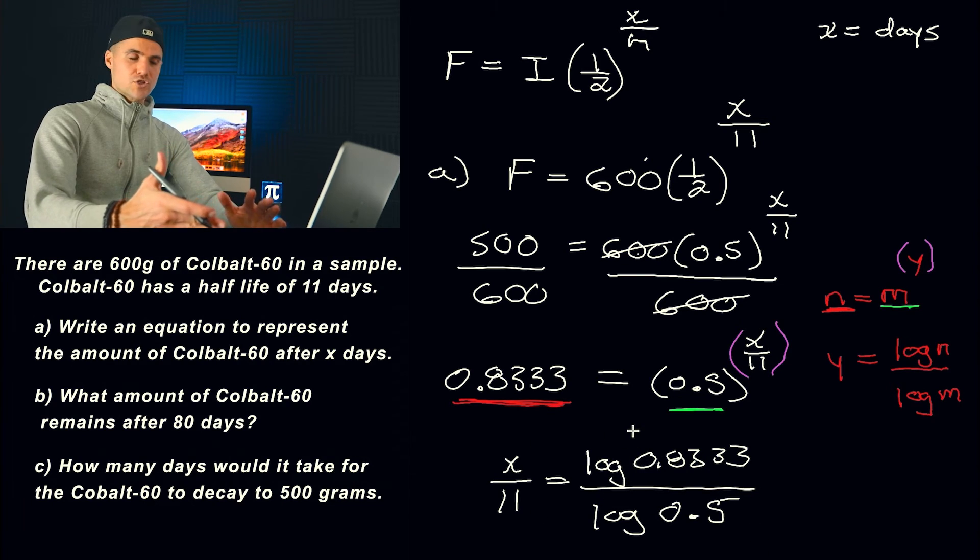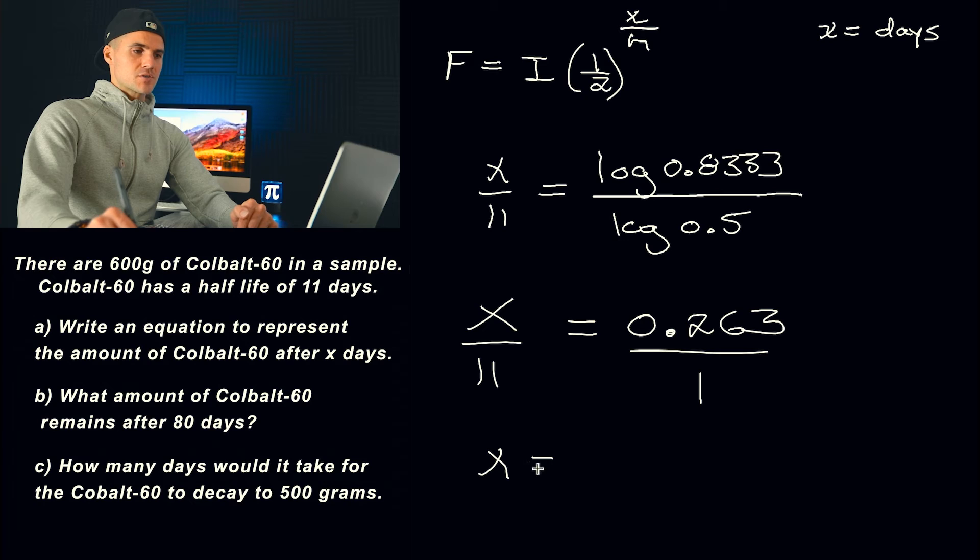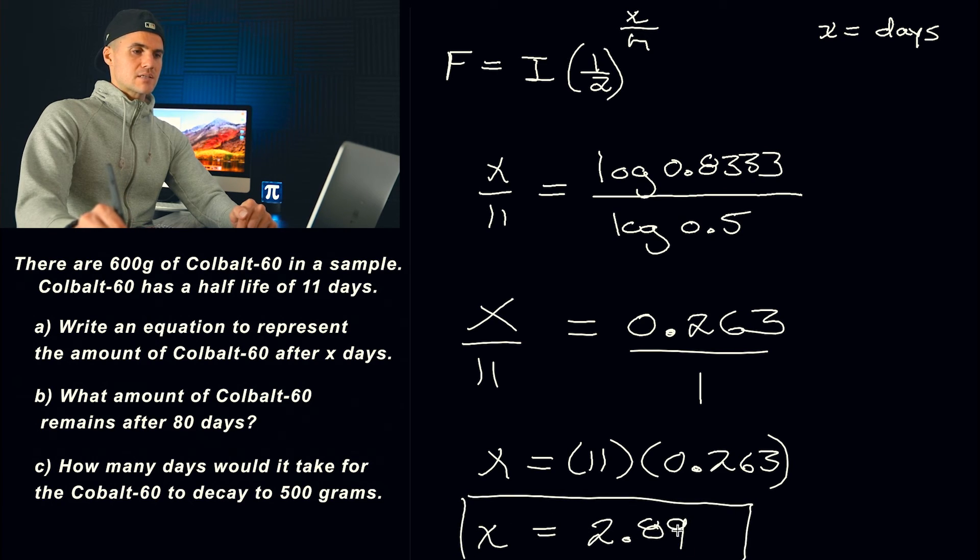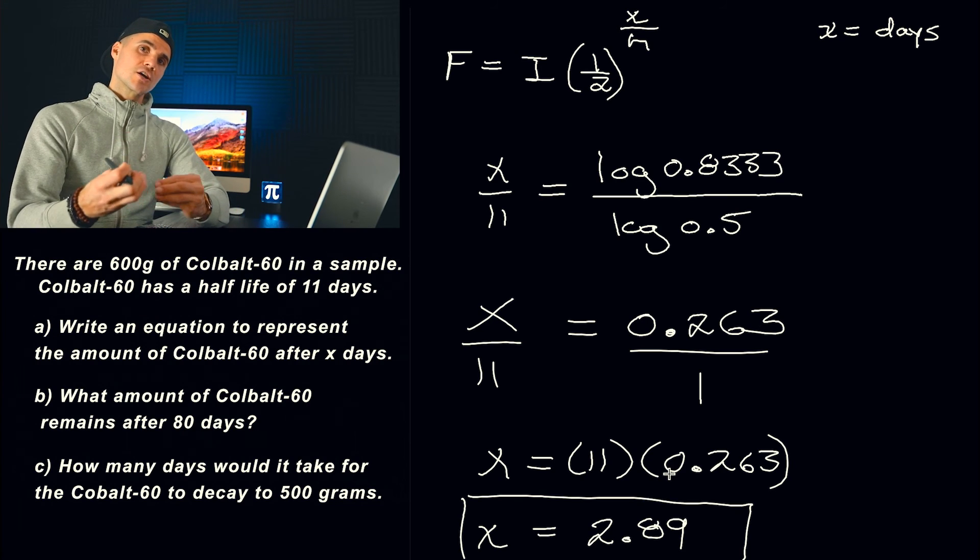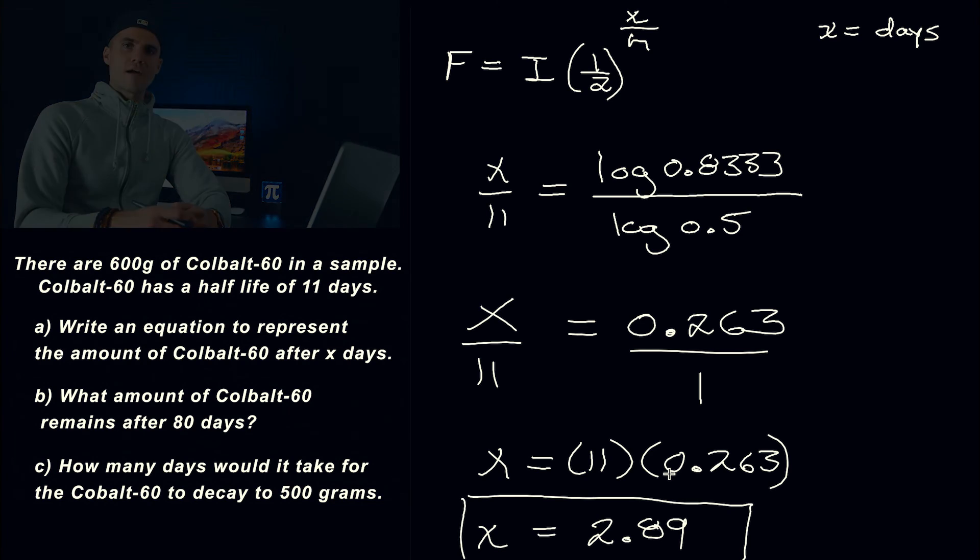So if you plug this right side into your calculator, log of 0.8333 over log of 0.5, you would get 0.263. That's going to be over 11. We could just cross multiply from here. So x is going to be 11 times 0.263. And then what would happen is you would end up getting 2.89. So it basically takes 2.89 days for 600 grams of cobalt-60 to decay to 500. And that is the end of the video.